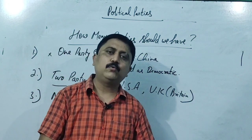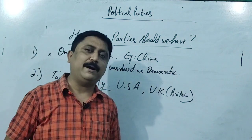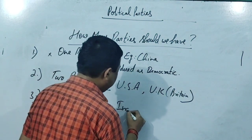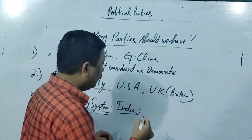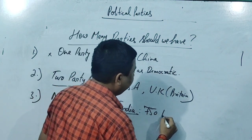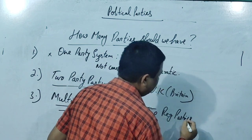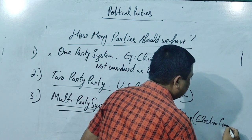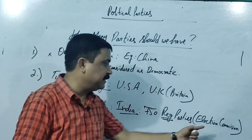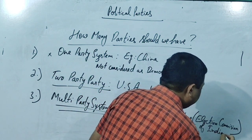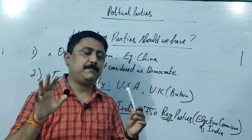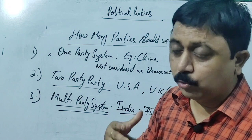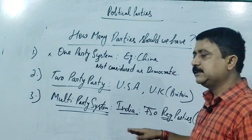The third type is the multi-party system, which means more than one party - and in India's case we are talking about having 750+ registered parties. These are registered with the Election Commission of India, which assigns names and symbols. In the next video we will cover national level parties and state level parties and the criteria for each. The multi-party system in India has around 750 parties.